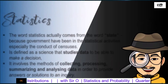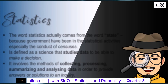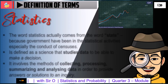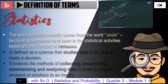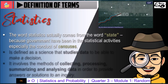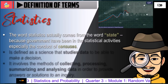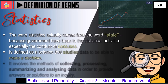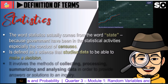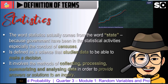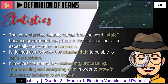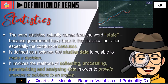Before we proceed to the lesson proper, let us define first some of the terms we will encounter in this module. Statistics: the word statistics actually comes from the word 'state' because governments have been engaged in statistical activities, especially the conduct of censuses. It is defined as the science that studies data to be able to make a decision. It involves the methods of collecting, processing, summarizing, and analyzing data in order to provide answers and solutions to an inquiry.